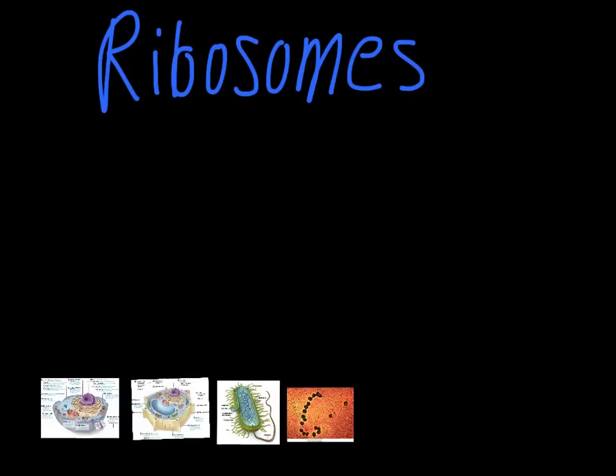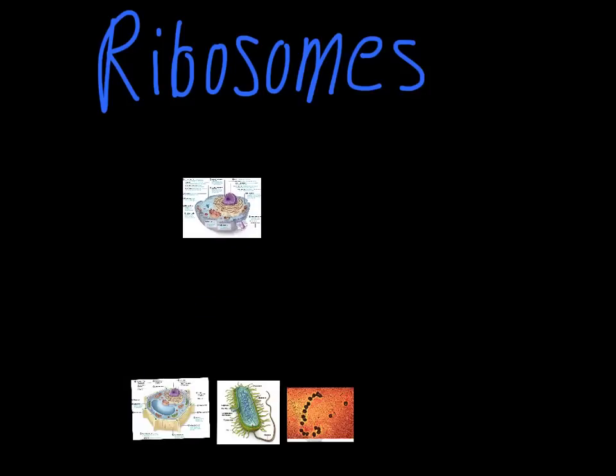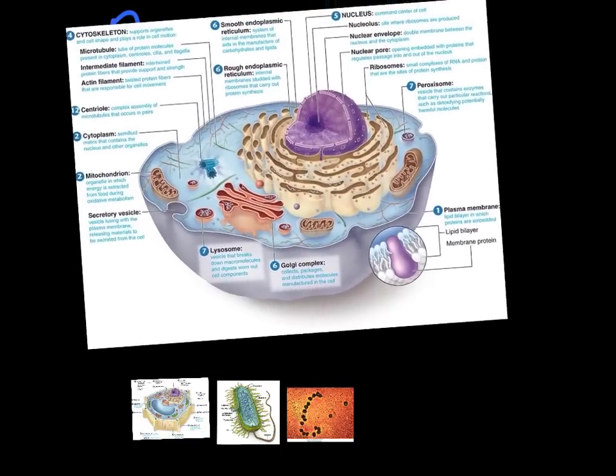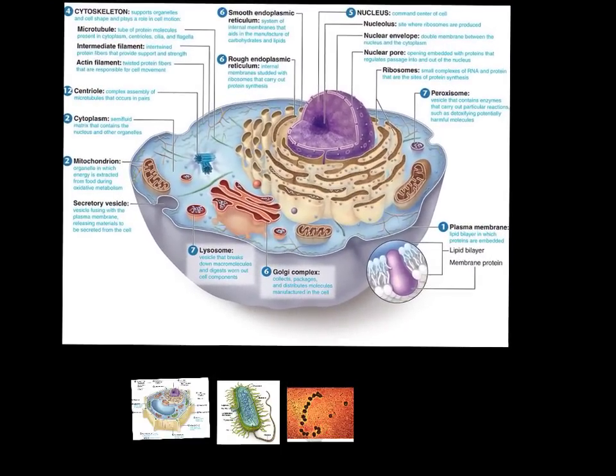This video is designed to teach you about the ribosomes. To start off, we'll look at our animal cell diagram like we usually do. Try to identify these in here. One of the things about the ribosomes is they're actually found in multiple locations. There are small complexes of RNA and protein that are the sites for protein synthesis. That is their main function — ribosomes are making proteins.